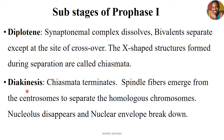In the last sub-phase, Diakinesis, the chiasmata terminalize and the spindle fibers are emerging from the centrosomes with the main purpose of separating the homologous chromosomes. The nucleolus disappears and the nuclear envelope breaks down. Those are the five stages that occur in Prophase I.